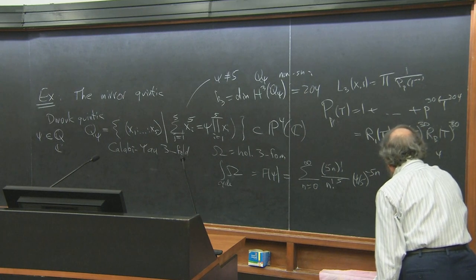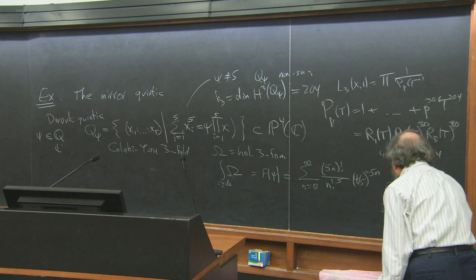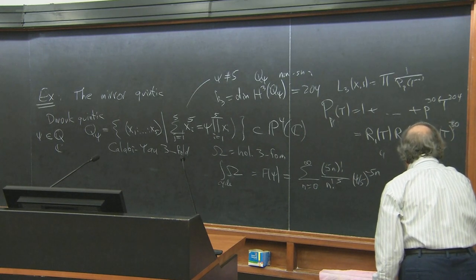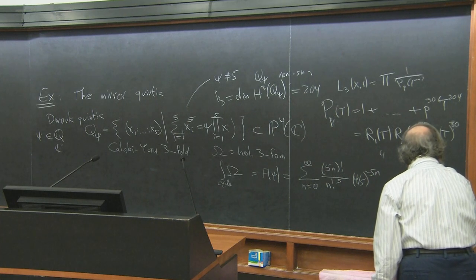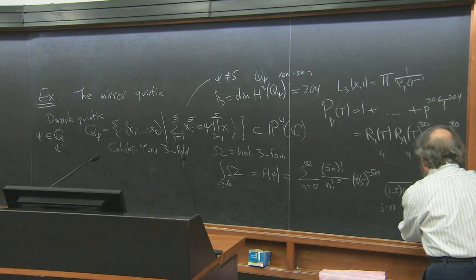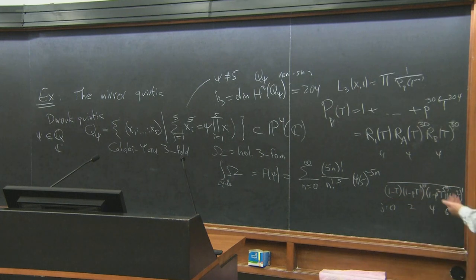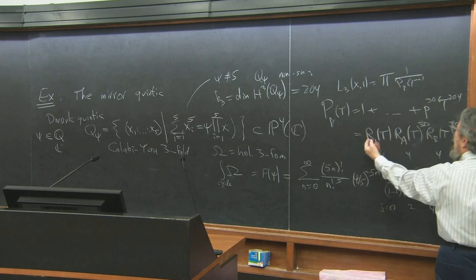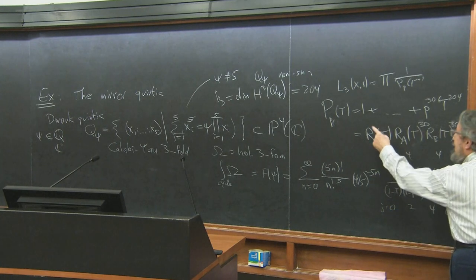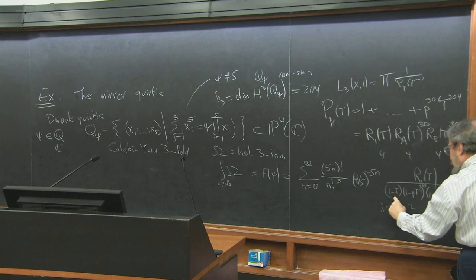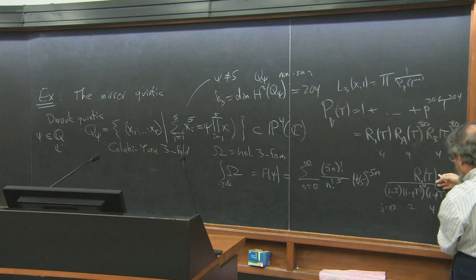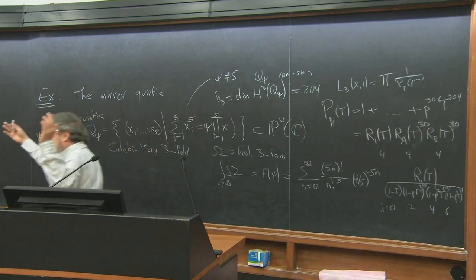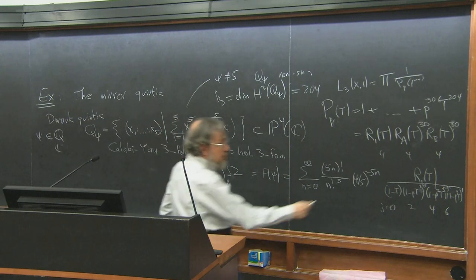For the dual family, you can write the corresponding thing. In the full L-function, the denominator (corresponding to j = 0, 2, 4, 6) gives trivial factors corresponding to Riemann zeta functions raised to powers 1, 101, 101, and 1—totaling 204, which is the mirror symmetry. There's a duality: for the dual quintic, the numerator has only one factor R_1(t), whereas for the original one the numerator has several factors. The point is that from 204-dimensional Betti homology, we pick out in particular one interesting piece that occurs in both: a polynomial of degree 4, which I'll call R_ψ(t).